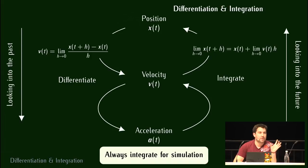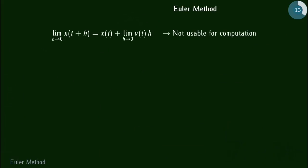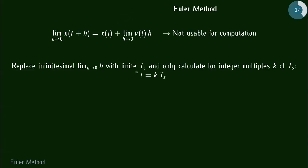On va pouvoir utiliser l'intégration pour prédire la position de notre système. Si on connaît un paramètre à un temps T et qu'on essaye d'obtenir ce paramètre à un temps T plus quelque chose, alors on va choisir d'intégrer. Le problème de ces équations c'est qu'elles ne sont pas utilisables par des ordinateurs tels quels. Il va falloir trouver une méthode pour les écrire sous forme d'algorithme. On va remplacer la limite de H qui tend vers 0 par un pas de temps, et calculer ça uniquement pour des multiples de ce pas de temps.